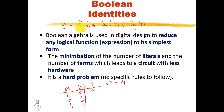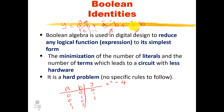For the last case, a=1 and b=1: ab' gives zero, a'b gives zero, and ab gives one. So zero OR zero OR one gives Y equals one. So the truth table of Y = ab' + a'b + ab gives outputs: 0, 1, 1, 1.